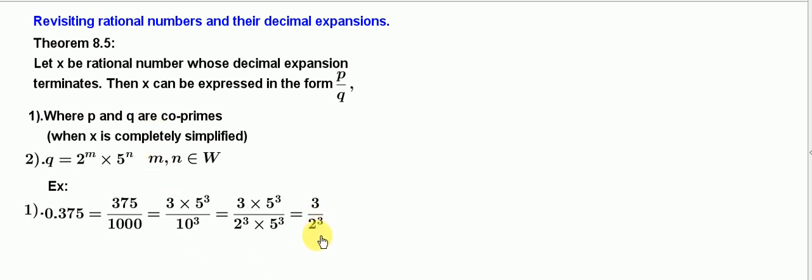And again, 2³ equals 2³ × 5⁰. Here, in place of m we have 3. Also, in place of n we have 0. Therefore, 3 and 0 belong to W.